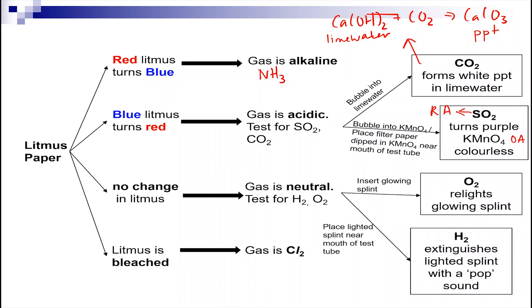What happens when there's no change in litmus? It means that the gas is neutral, and usually it's hydrogen or oxygen. To test for oxygen gas, you insert a glowing splint, and the oxygen gas will relight the glowing splint. This is because oxygen gas supports combustion, so it will relight the glowing splint.